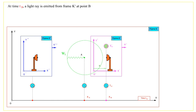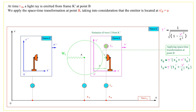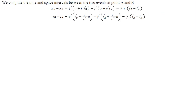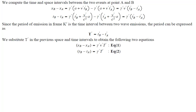At time Tb, a light ray is emitted from frame K' at point B. We apply the spacetime transformation at point B, taking into consideration that the emitter is located at X'B equals A. We compute the time and space intervals between the two events at points A and B. Since the period of emission in frame K' is the time interval between two wave emissions, the period can be expressed as T' equals T'B minus T'A. We substitute T' in the previous space and time intervals to obtain the following two equations.